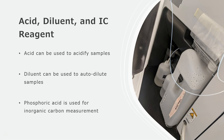There are also five bottles on the side of the TOC that need to be checked regularly. Three of them are the hydrochloric acid, the diluent, and the IC reagent which is phosphoric acid. The acid bottle is used for acidification of the samples, which is nice if you haven't acidified them yourself. Acidification of the samples is necessary for the TOC and we'll talk about that later. The diluent bottle is also nice since the instrument has the ability to auto dilute your samples and your calibration curve. Making calibration curves is a pain, so having the instrument do it for you is a great option.